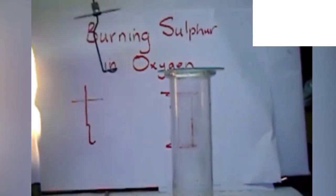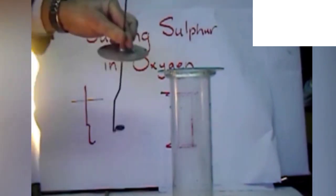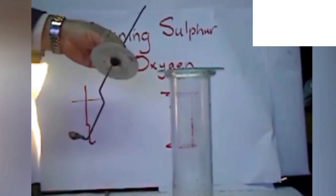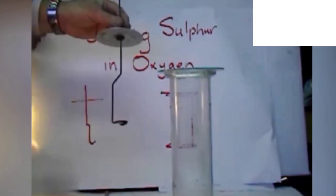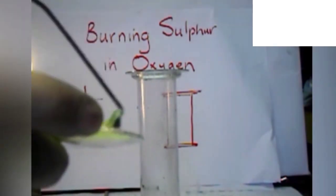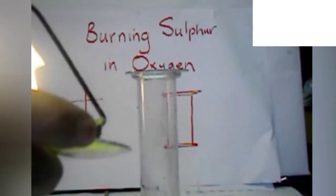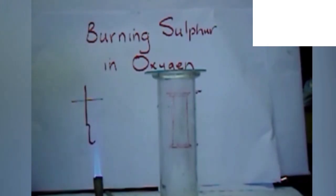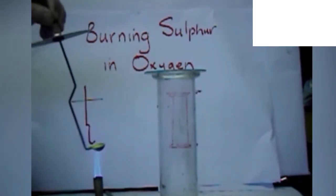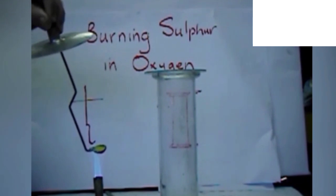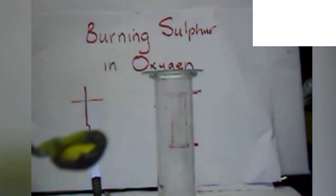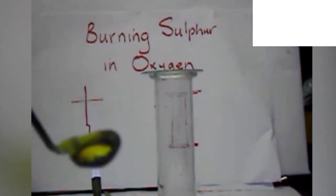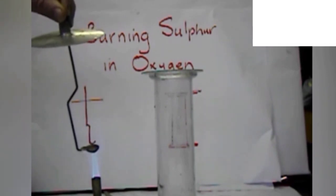For this, we need a special instrument called burning spatula, which helps us in burning the substance and introducing it into a glass jar. Let me take some amount of sulfur into the burning spatula and then introduce it onto the flame. Interestingly, when I introduce this sulfur powder to the flame, it starts melting. You can see that the powder slowly converting into liquid. Once the whole powder is converted into liquid, now you can see that there is no more powder in the spatula.